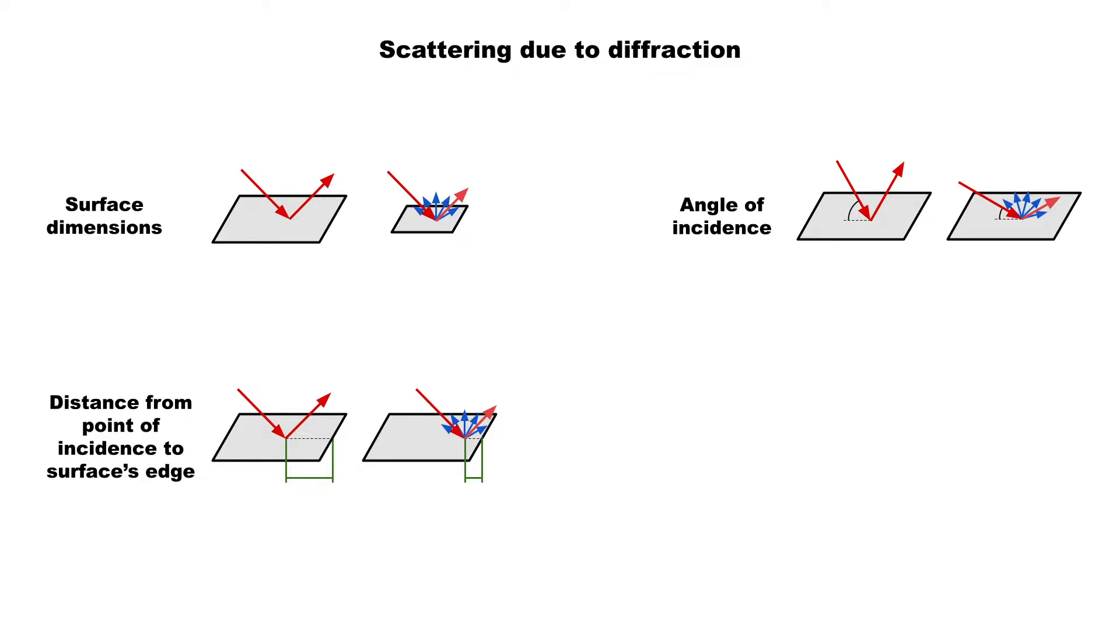Next is the angle of incidence. A ray coming at a flatter angle will produce more scattering. Finally, there's the incident path length. There will be more scattering if the ray has traveled a longer distance from the last reflection point, or from the source if it's direct sound.